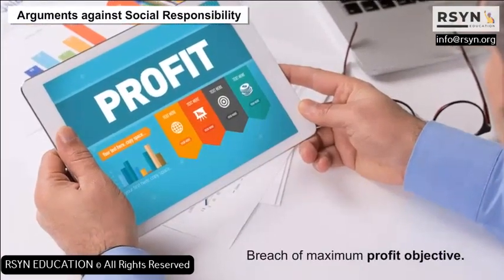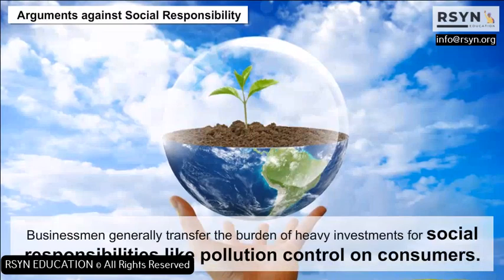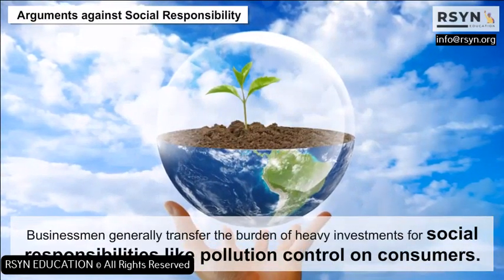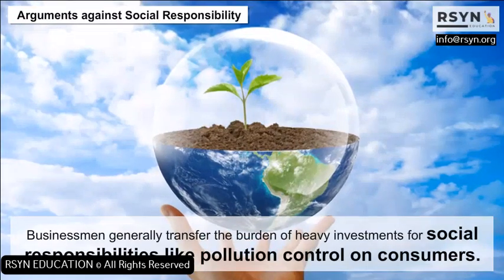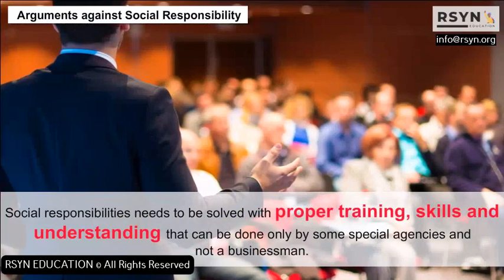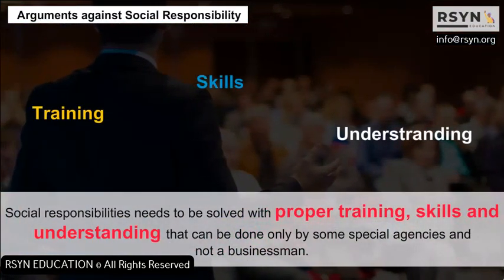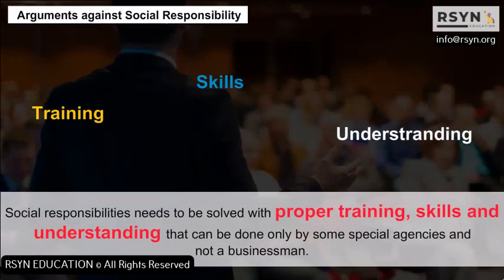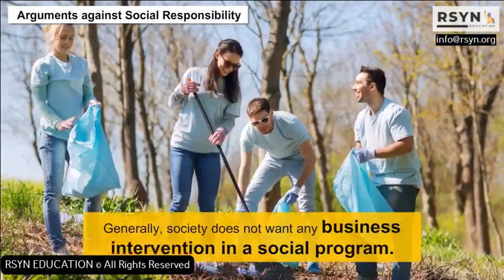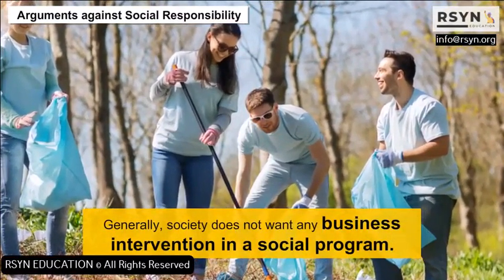Arguments against social responsibility: 1. Breach of maximum profit objective. 2. Businessmen generally transfer the burden of heavy investments for social responsibilities, like pollution control, on consumers. 3. Social responsibilities need to be solved with proper training, skill and understanding, that can be done only by some special agencies and not a businessman. 4. Generally, society does not want any business intervention in a social program.